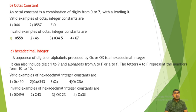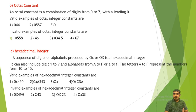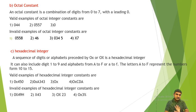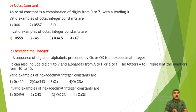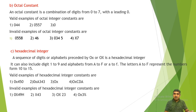Invalid examples of hexadecimal integer constants: first, 0x949H — invalid because 'H' is not an allowed letter. Second, x43 — invalid because hexadecimal must be preceded by 0x, not just x. Third, 0x 43 (with a blank space) — invalid because blank space is not allowed. Fourth, 0x3% — invalid because '%' is a special symbol which is not allowed.